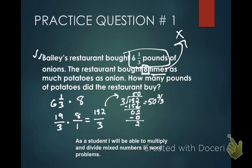But I need a label because it's a word problem. Going back to the question — the label is pounds. So the answer is 50 and two-thirds pounds. That's example one. Let's move on to example two.